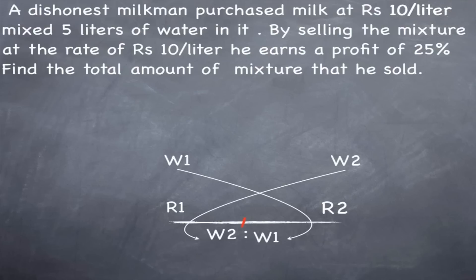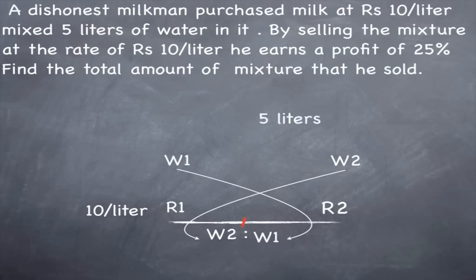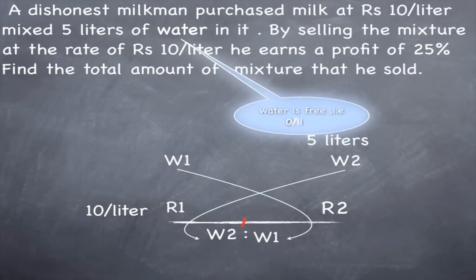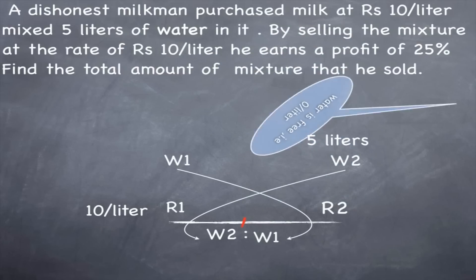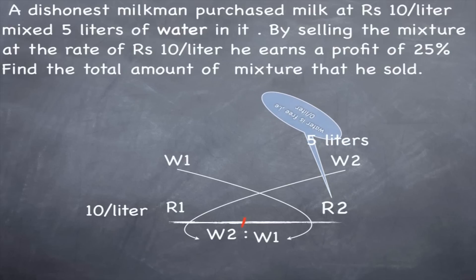Very simply, for the first part it says Rs.10 per liter, which is the rate — put it at rate 1. And 5 liters of water is mixed in. There is milk and there is water. The rate for water would be 0, so put that on the other side, and put 5 as the weight for the water.